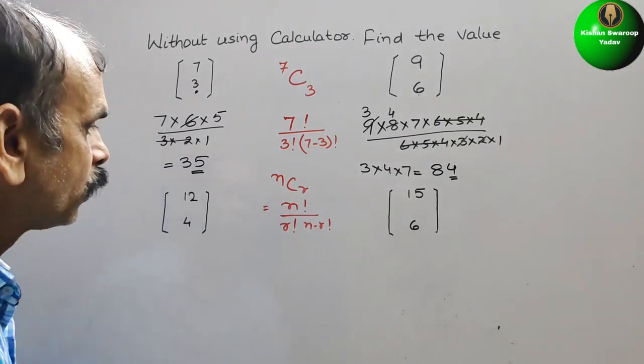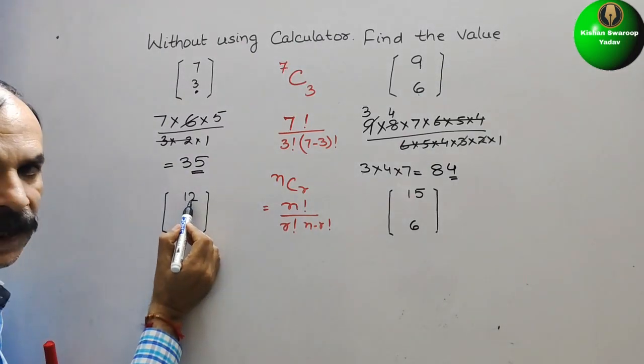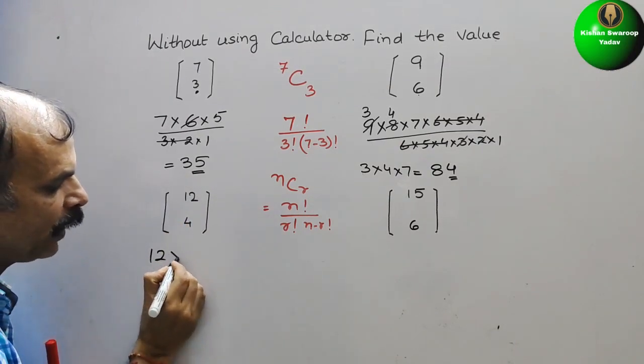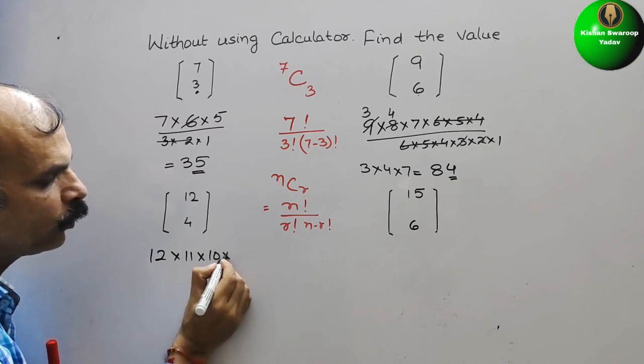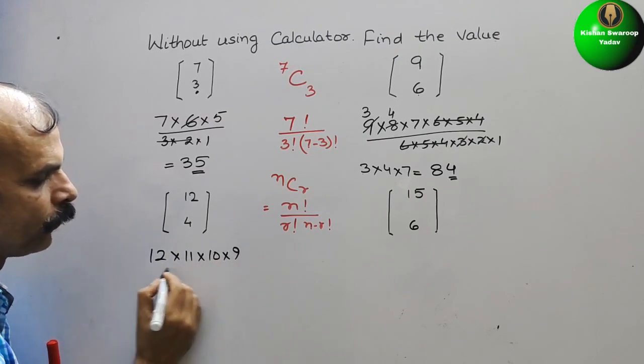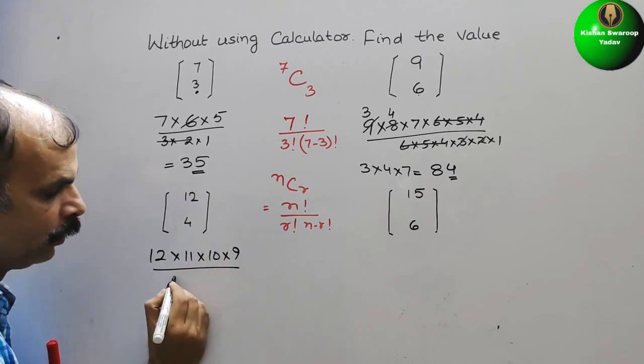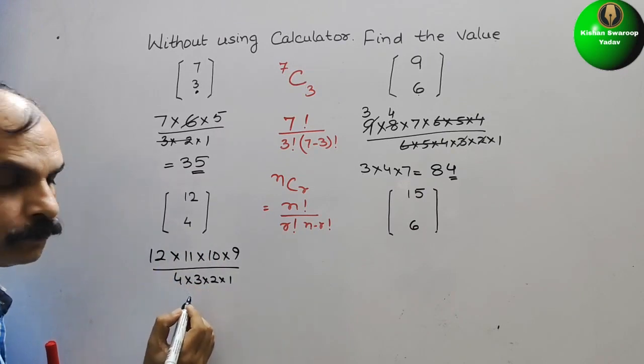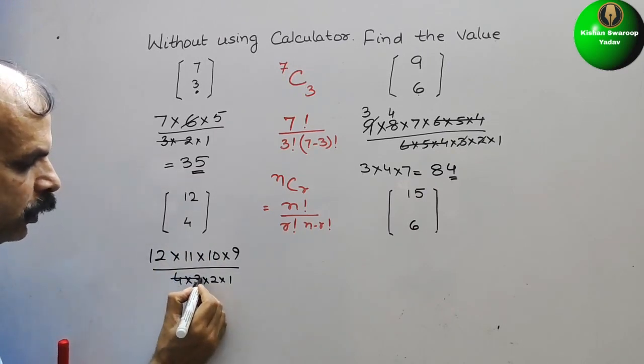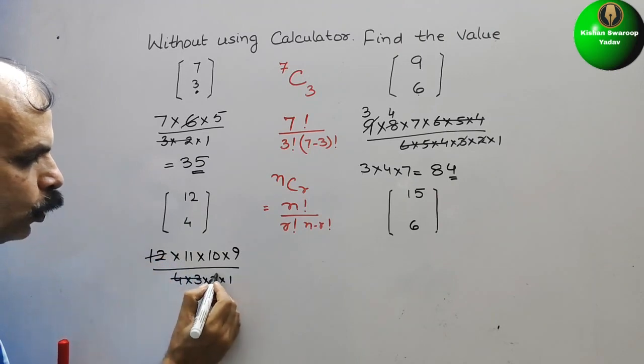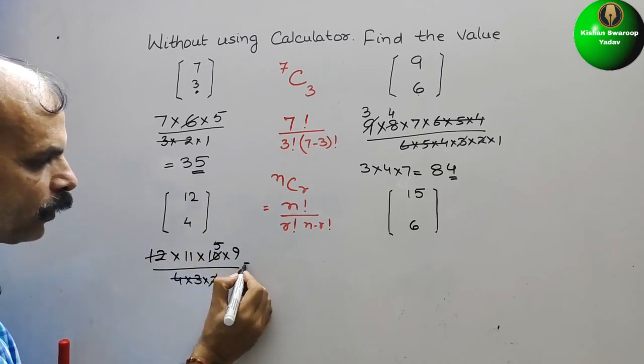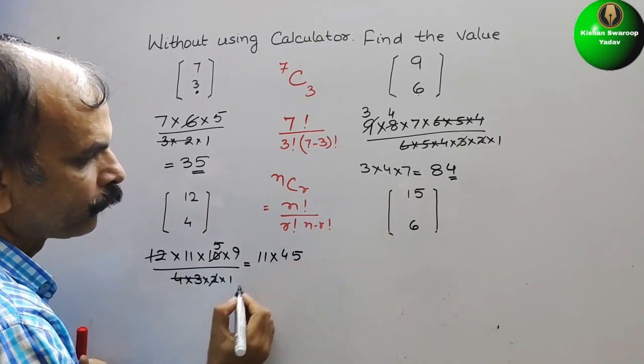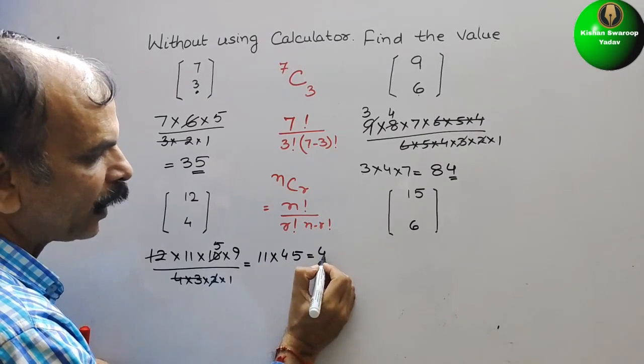Comes here, here 12 factorial we have to write up to the 4 digit only. So that is nothing but 12 into 11 into 10 into 9. By 4 factorial. So 4 into 3 into 2 into 1. So now just we will reduce it, 4 into 3 is 12. 2, here comes 5. So now it is 11 into 45. So this is nothing but 495.